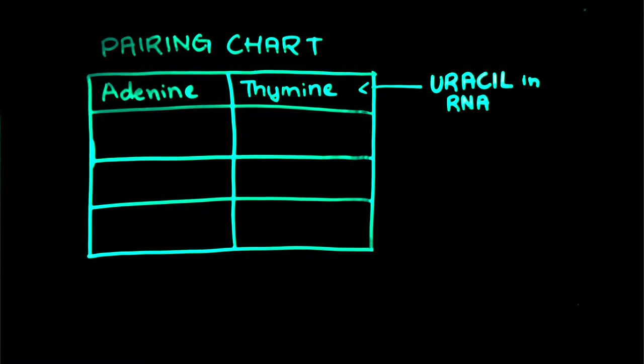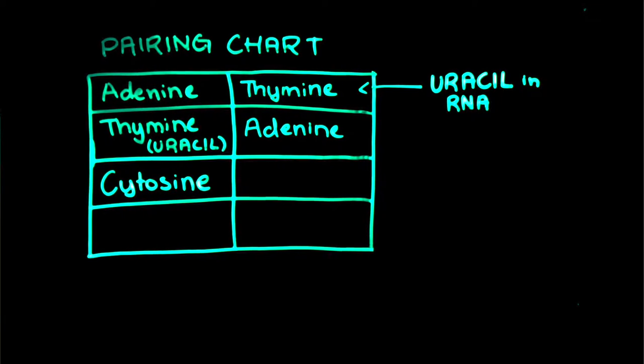Adenine pairs up with thymine, or uracil in RNA. Thymine, or uracil in RNA, pairs up with adenine. Cytosine pairs up with guanine, and guanine pairs up with cytosine. With that said, we can now start.